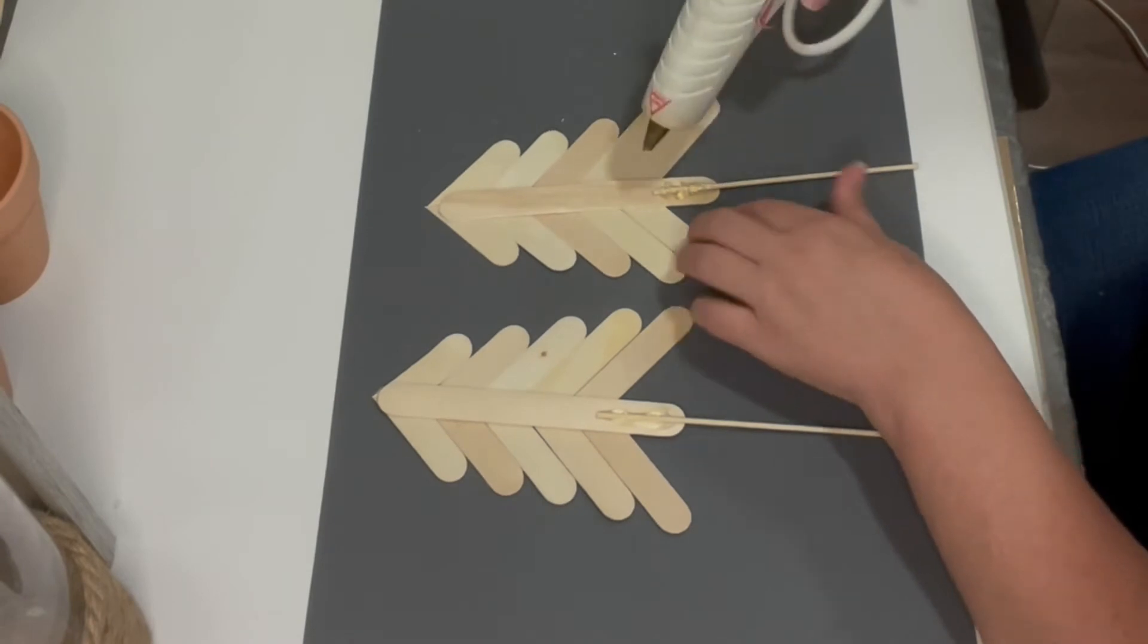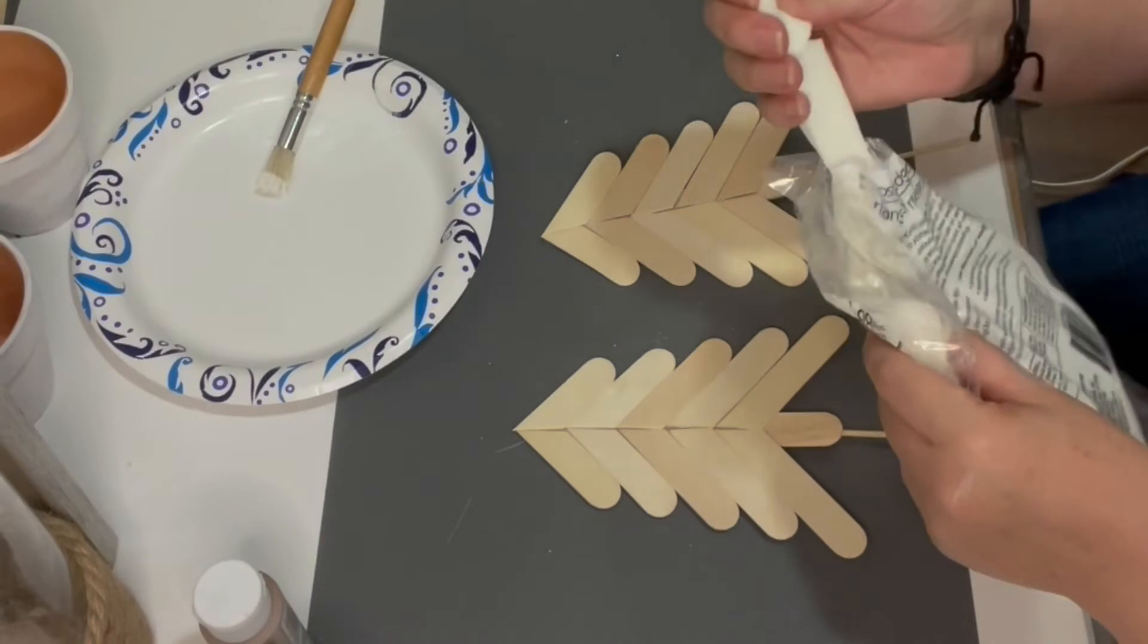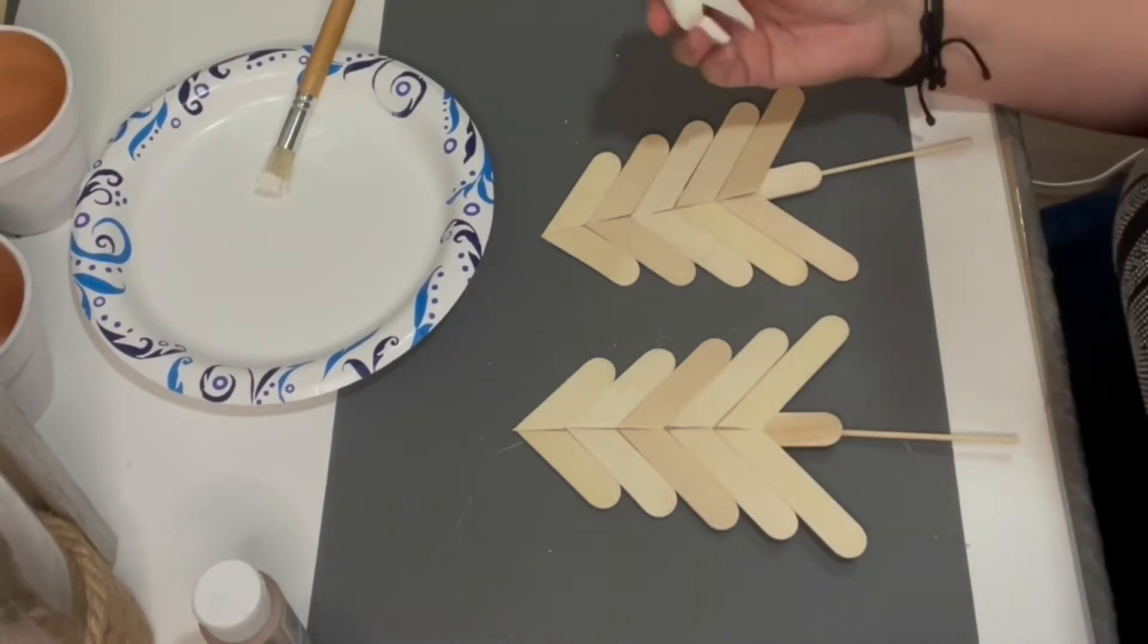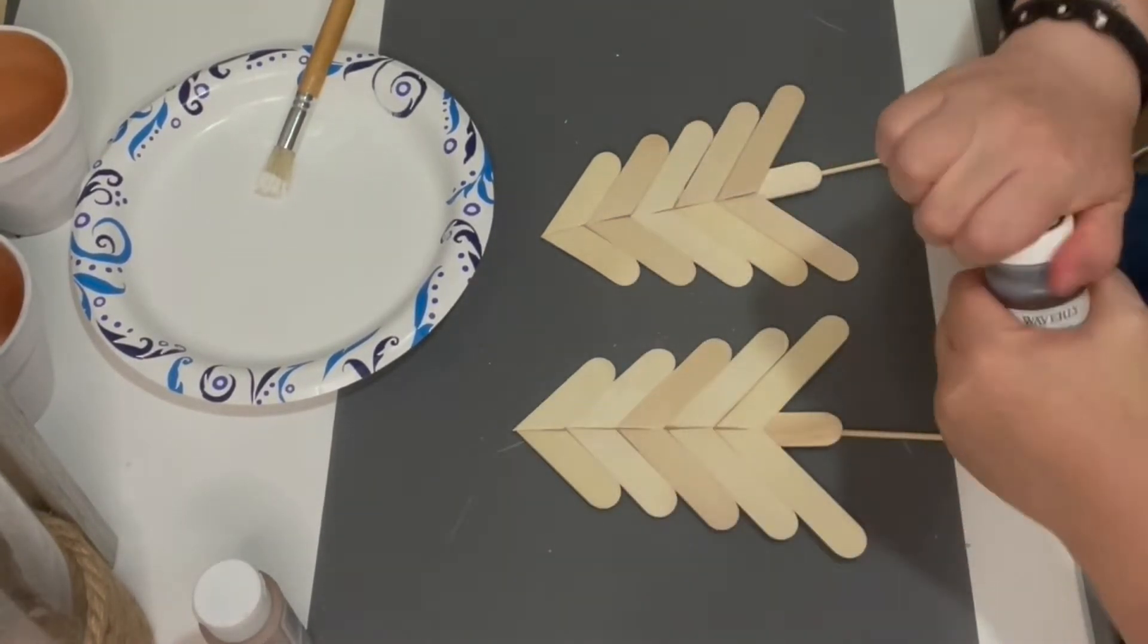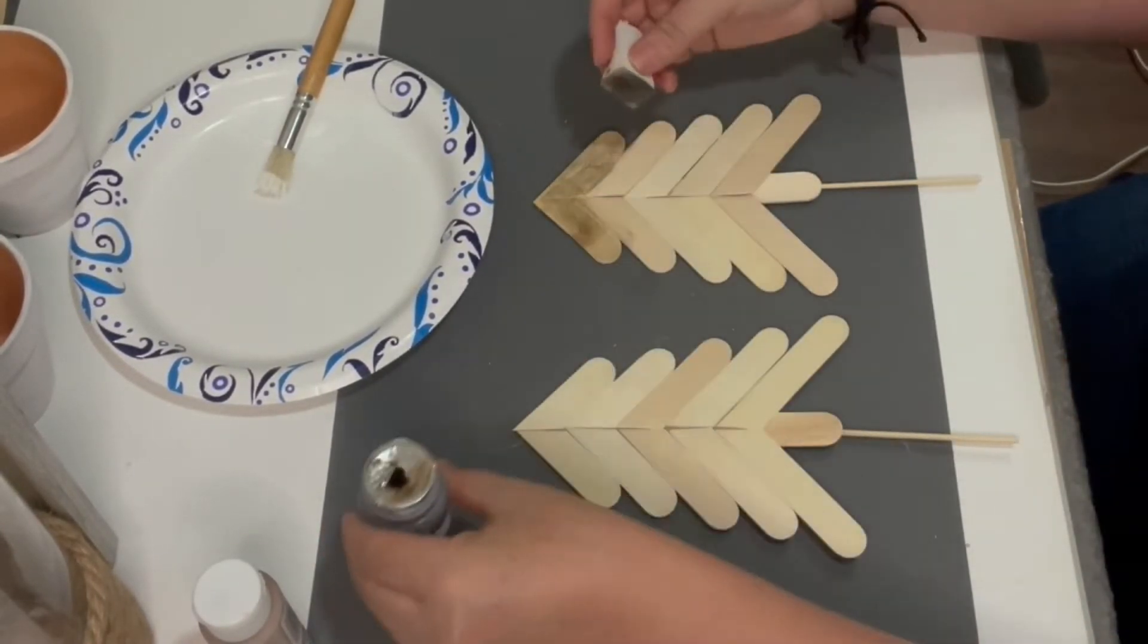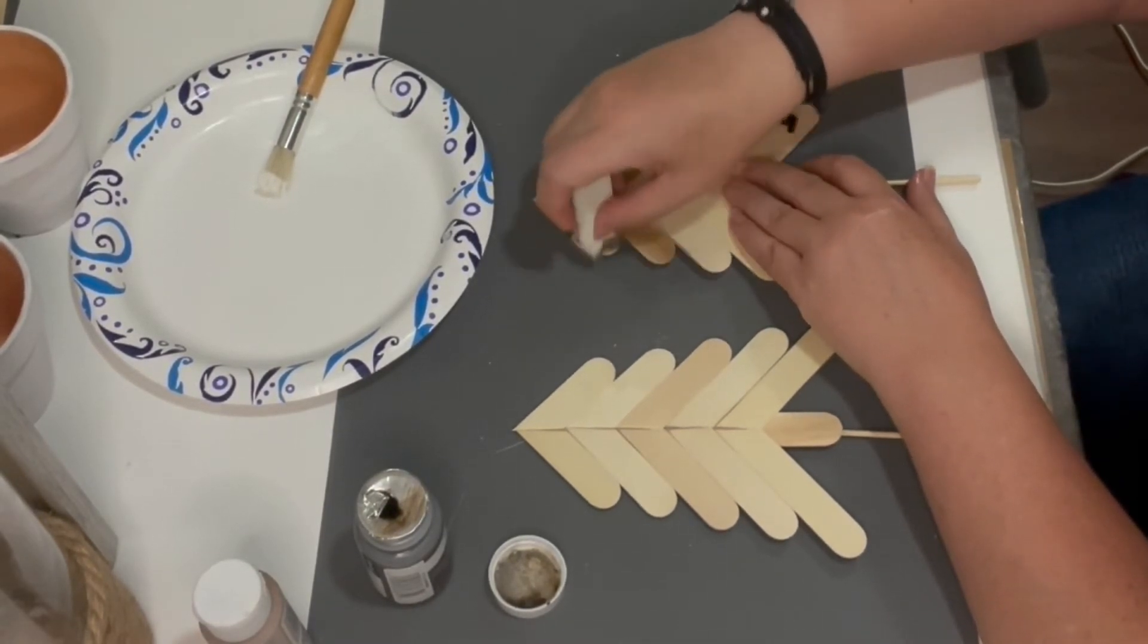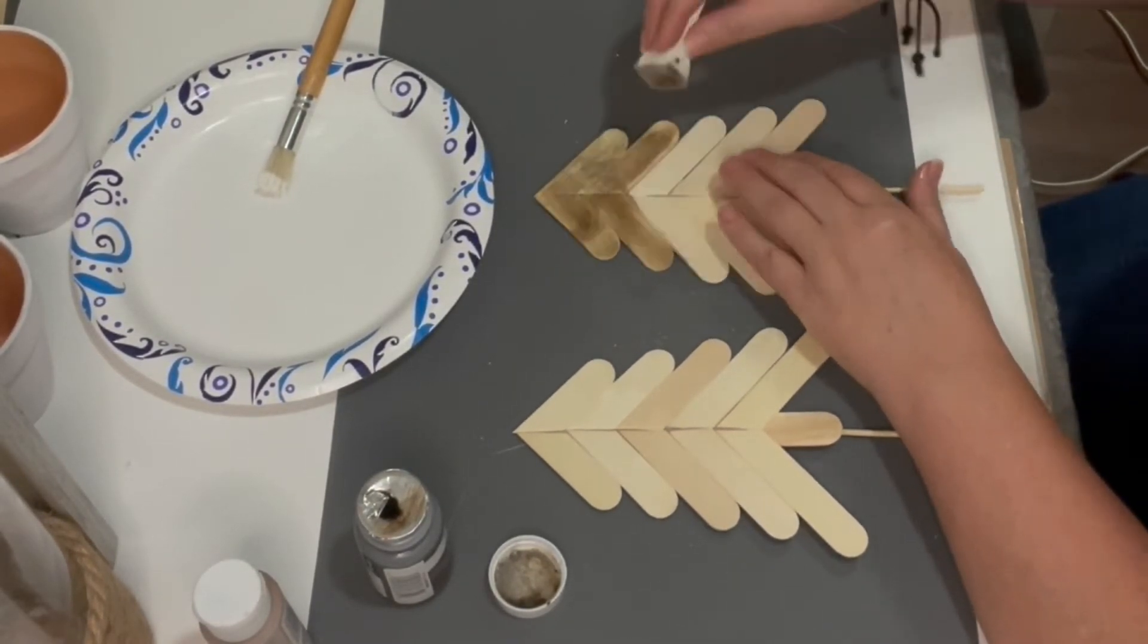Trees are done. I'm just adding more hot glue over my skewer sticks to secure them down. To stain my tree with this Waverly wax paint that I got, I'm going to use these cosmetic sponges. I did grab a little bit, I wasn't sure if I was going to like the color, but I did. I fell in love with it. So I went ahead and poured some onto my plate and stained both of my trees.